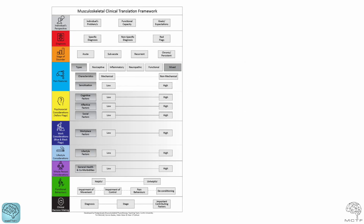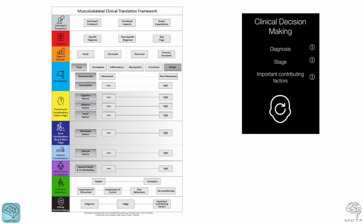The framework has been developed to have this single page that represents the different components or factors that might be contributing to the person's presentation, which we then put together as part of a clinical decision making process to give them — and ourselves — clarity around their diagnosis, the stage of their problem, and what the main contributing factors are. Anything we mark more to the right of the scale is more highly contributing, meaning those are the areas we might need to pay attention to for that patient. The beauty is that what we need to do for one person with a very similar condition as someone else might be quite different, giving us the ability to tailor our process of working out what's wrong and our management to the individual problem in front of us.